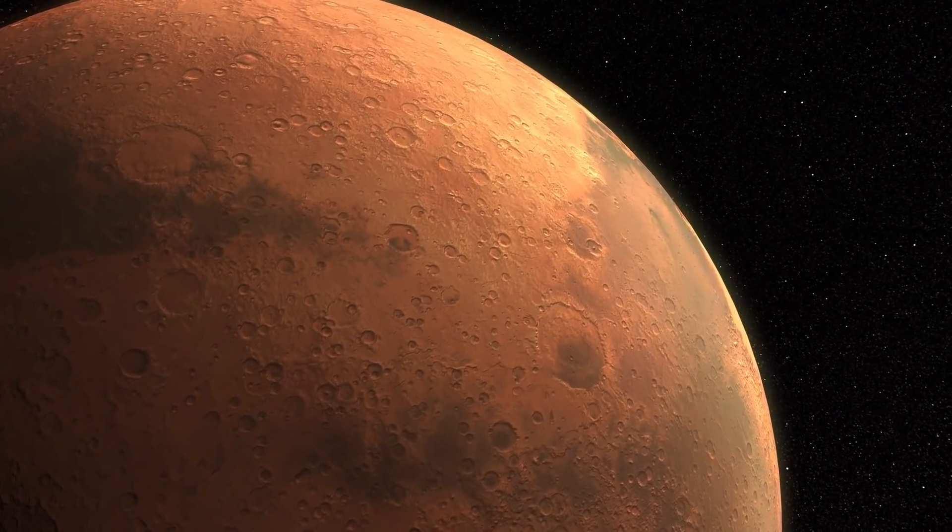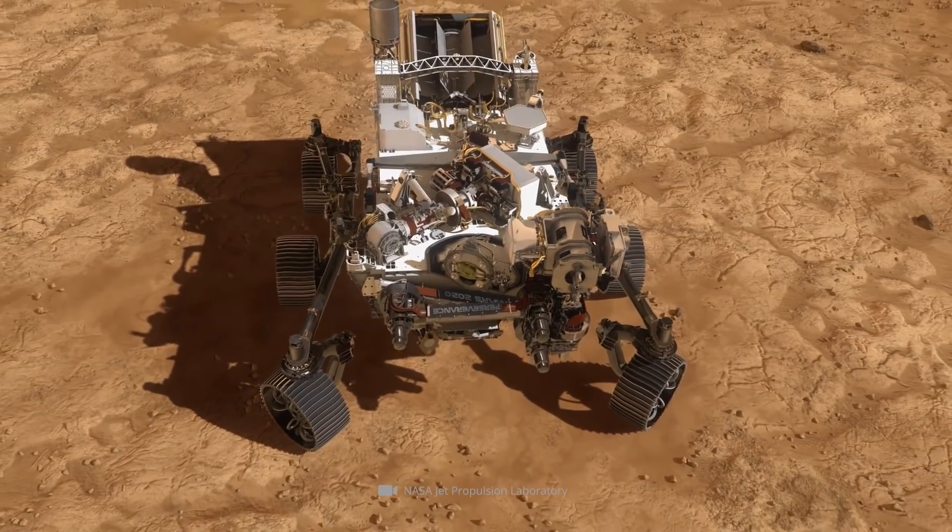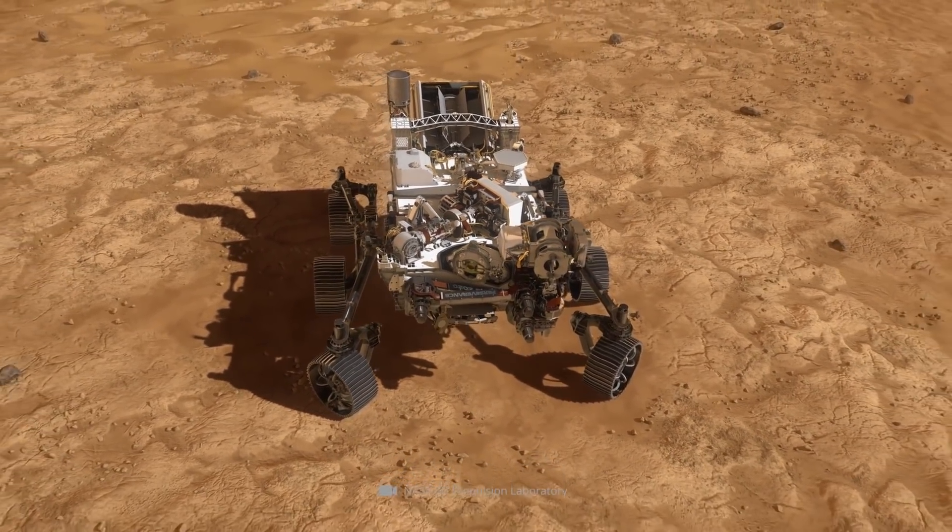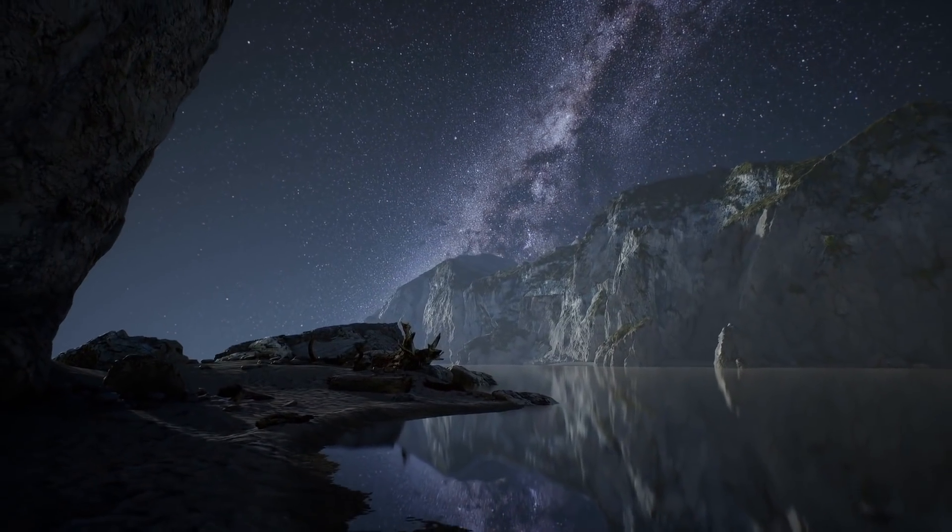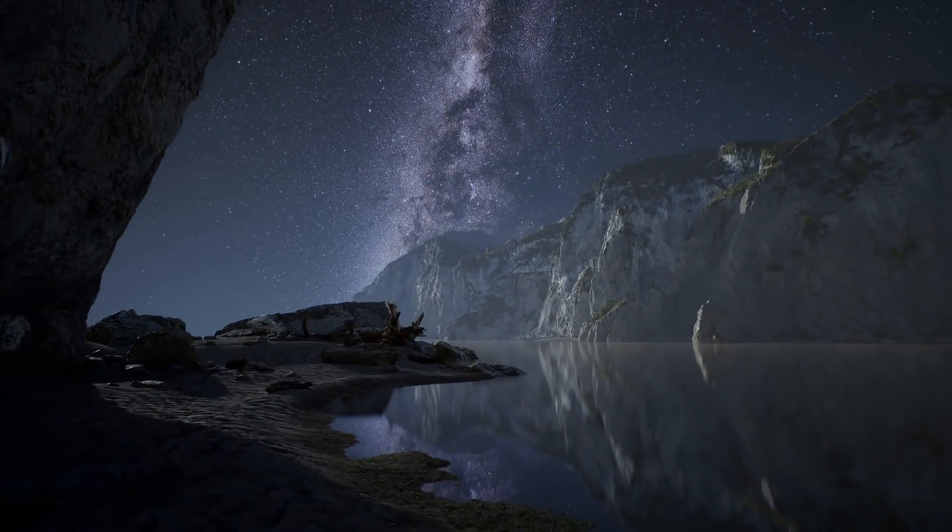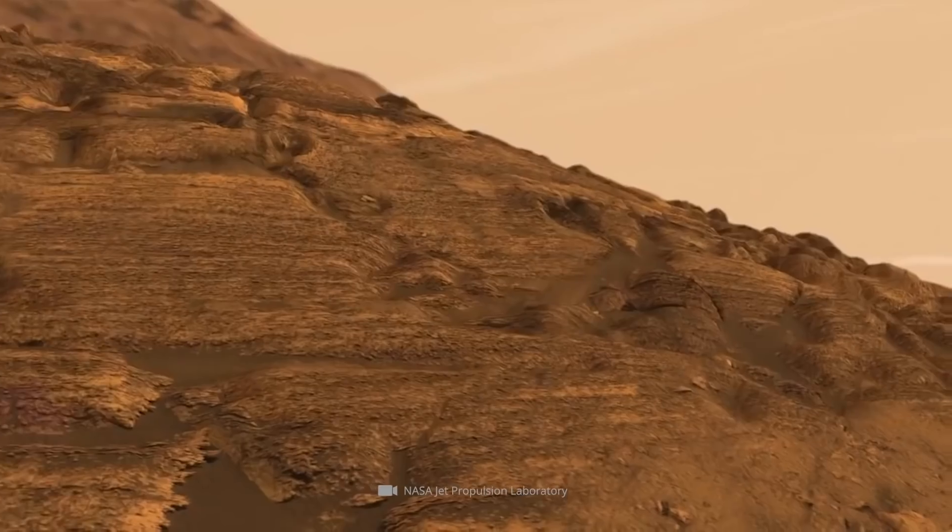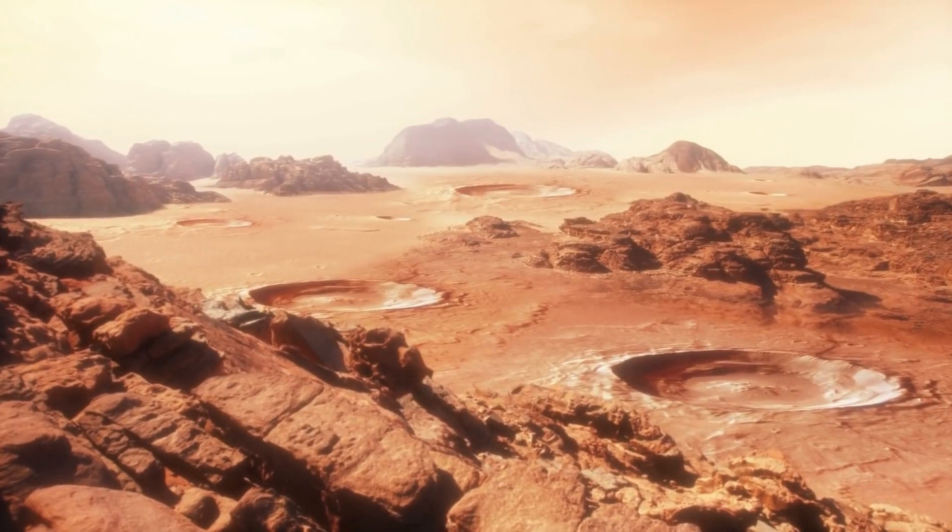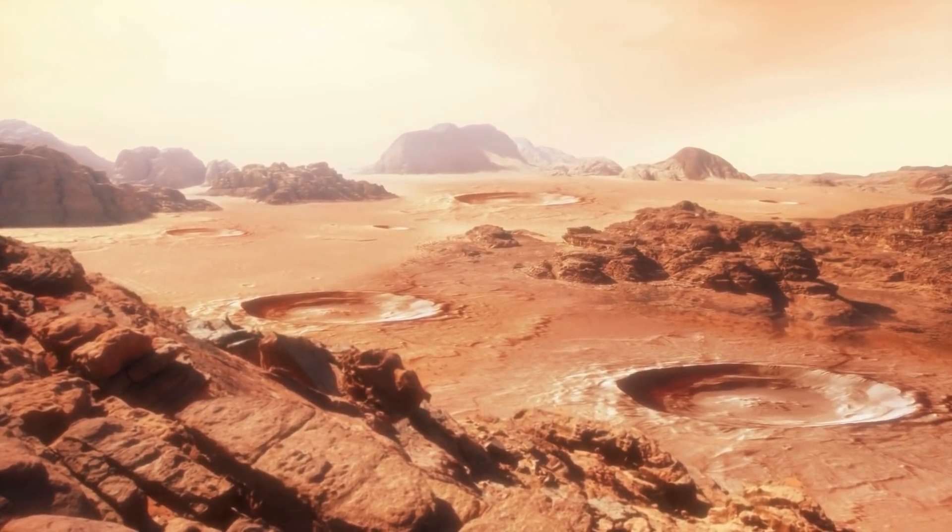Although no direct evidence for the existence of life on Mars has been discovered so far, the knowledge gained will help significantly to narrow down the cosmic search for clues in the future. For example, experts now know that some parts of the Martian rock are better suited for interpreting traces of the past than others.